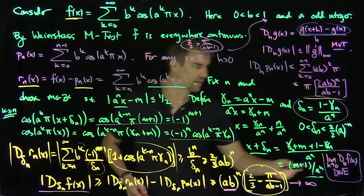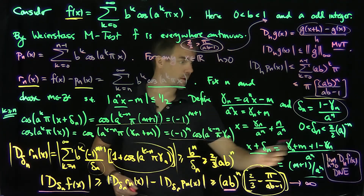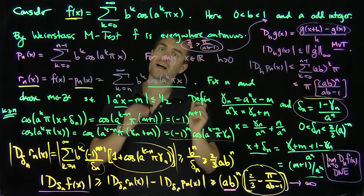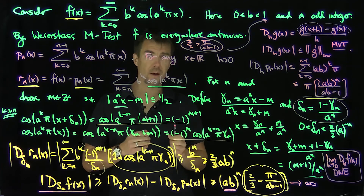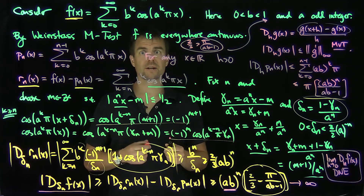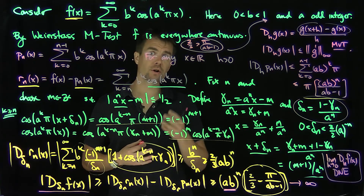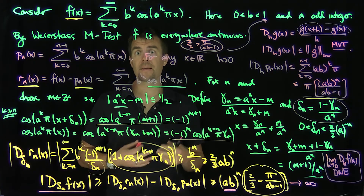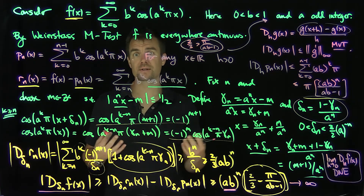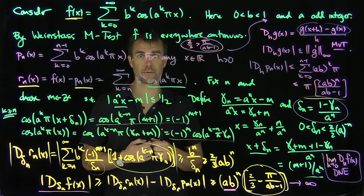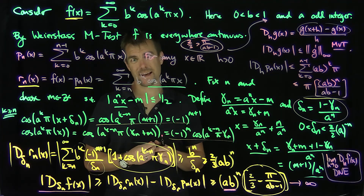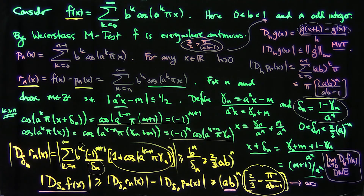So f is nowhere differentiable: no matter what x is, the limit as h goes to 0 of d_h f(x) does not exist, because we found a subsequence going to infinity for the right choice of a and b. So f is an example of a function which is nowhere differentiable but everywhere continuous. In fact, there's quite a good number of choices of parameters a and b for which this happens, giving a whole two-parameter family of such nowhere differentiable functions. Thank you very much.